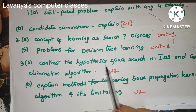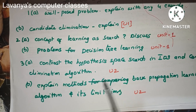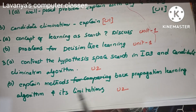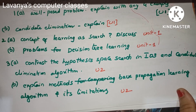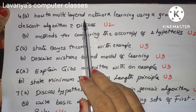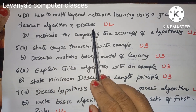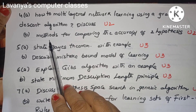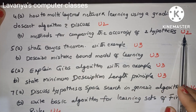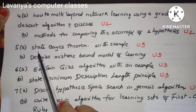Question 3(a) is 'Contrast the hypothesis space search in ID3 and Candidate Elimination algorithm' — from Unit 2. Question 3(b) is 'Explain the Back Propagation learning algorithm and its limitations' — also from Unit 2. Question 4(a) is 'How to perform multi-layered network learning using gradient descent algorithm' — from Unit 2. Question 4(b) is 'Explain the methods for comparing the accuracy of two hypotheses' — also from Unit 2. Questions 3 and 4 are entirely from Unit 2.